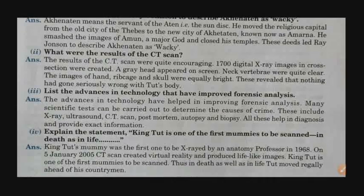Next question: explain the statement 'King Tut is one of the first mummies to be scanned in death as in life.' King Tut's mummy was first examined by an anatomy professor in 1968. On 5th January 2005, CT scan created virtual reality and produced life-like images. King Tut is one of the first mummies to be scanned and thus in death as well as in life, King Tut moved regally ahead of his countrymen — just as when he was alive, he lived a royal life.